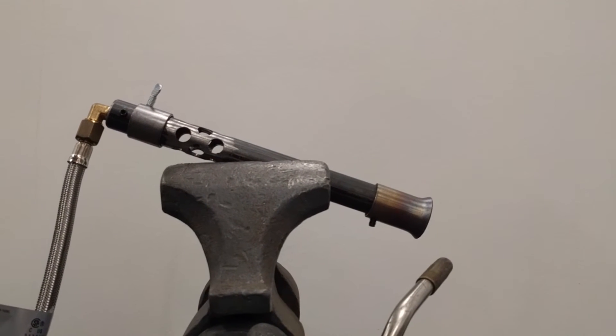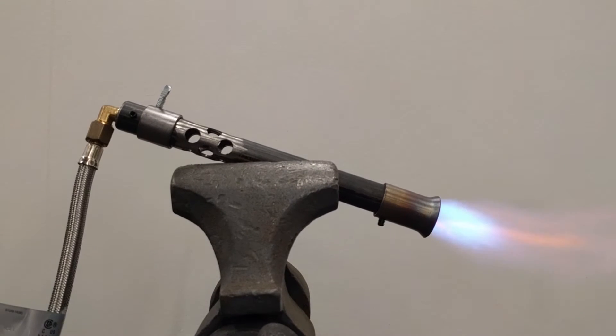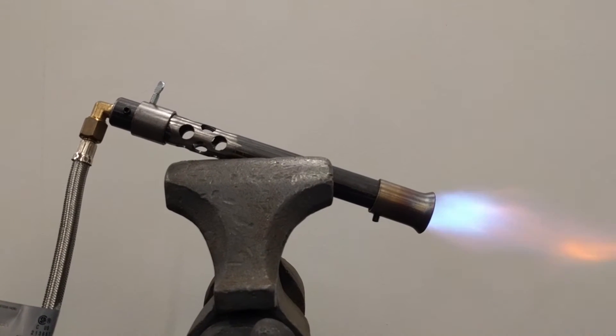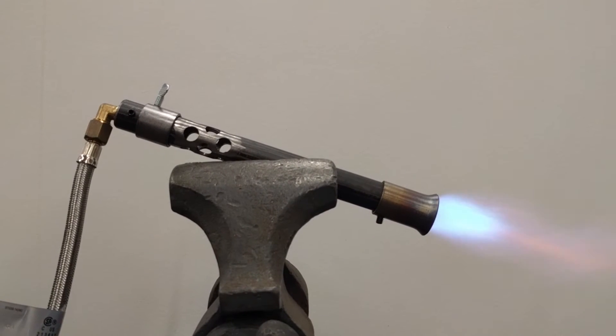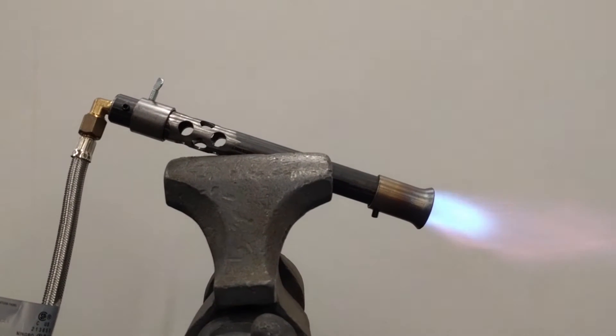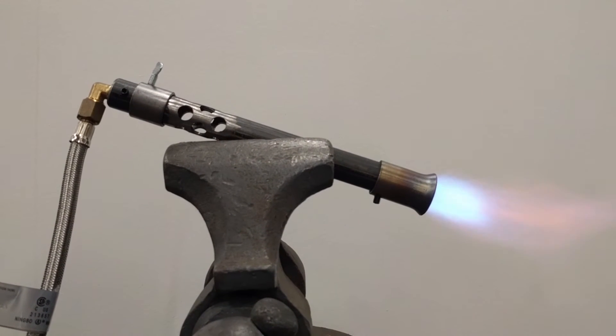We're then going to light at the end of the burner, not at the air holes. We always ignite at the end of the burner. If this is in a forge, you want to light it at the end. Don't try to light it at the air holes, because let me show you what's going to happen.